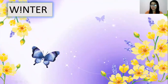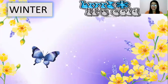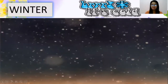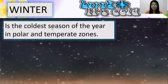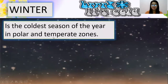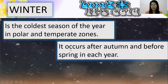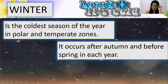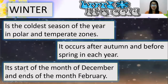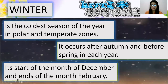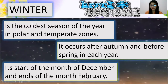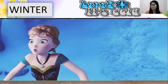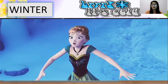First, we're going to talk about winter. During winter, it's cold and there is snow. Winter is the coldest season of the year in polar and temperate zones. It occurs after autumn and before spring. It starts in the month of December and ends in the month of February.